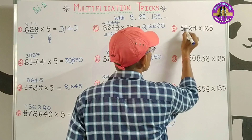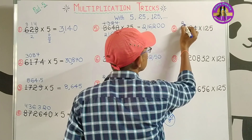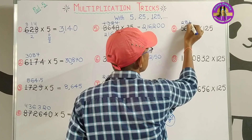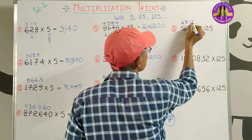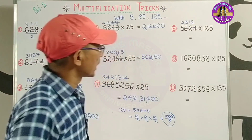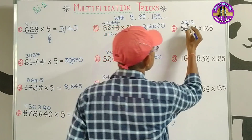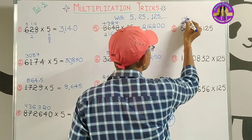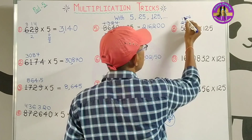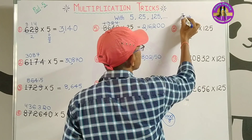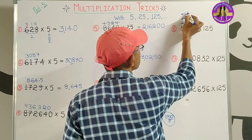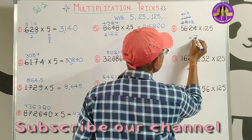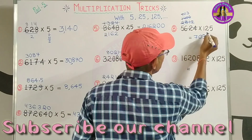First: 2 twos are 4, 2 eights are 16, 2 ones are 2, 2 twos are 4. Then: 2 ones, 2 fours, 2 zeros, 2 sixes. 2 sevens are 14, 2 zeros, 2 threes. 7, 0, 3 into 1, 2, 5 — 1 digit, 3 digits, 3 zeros.